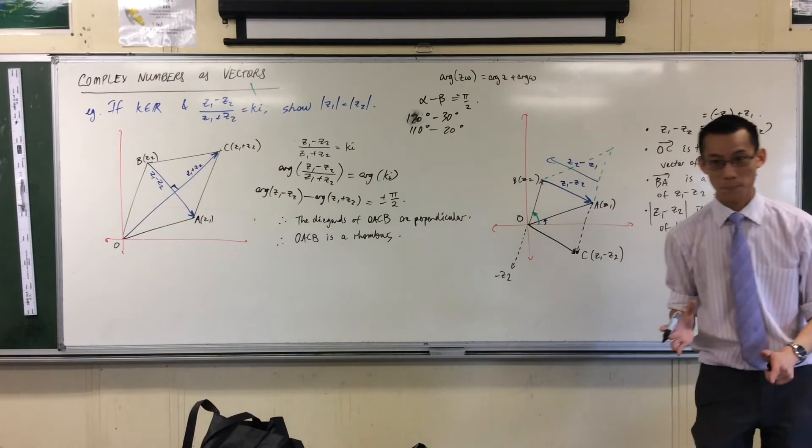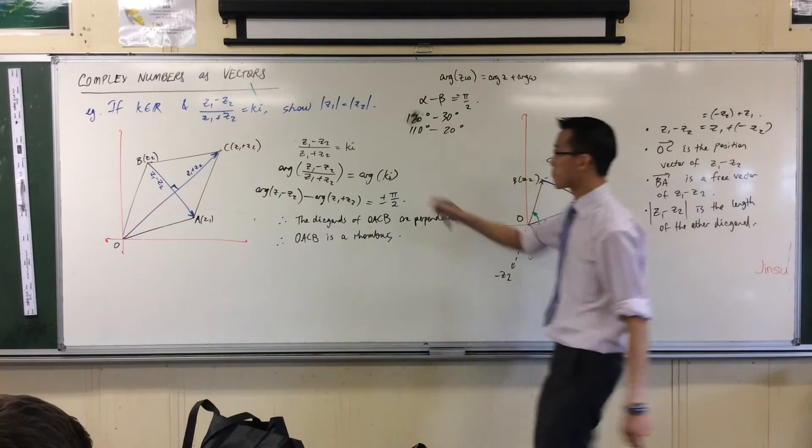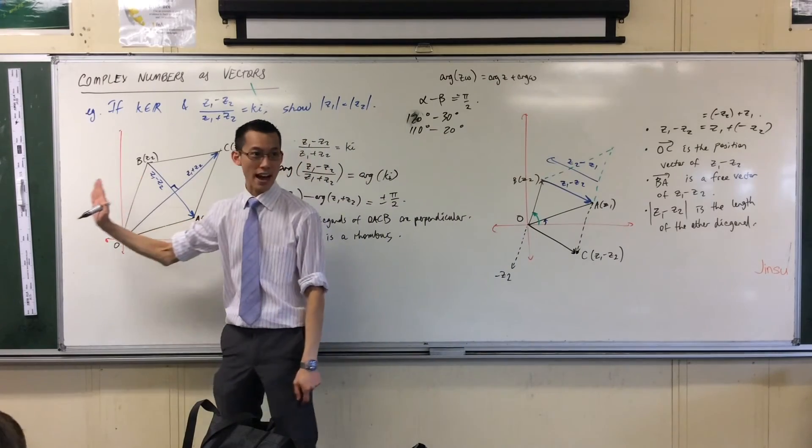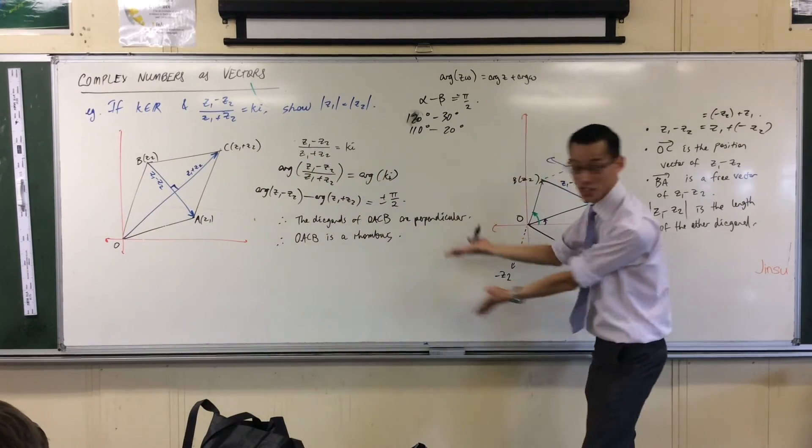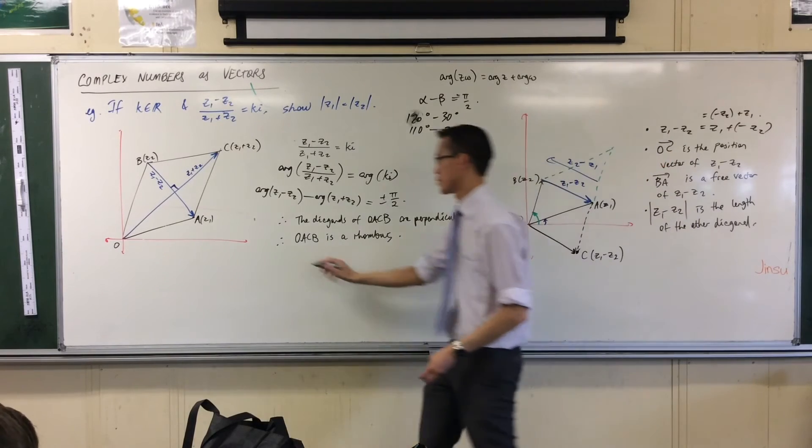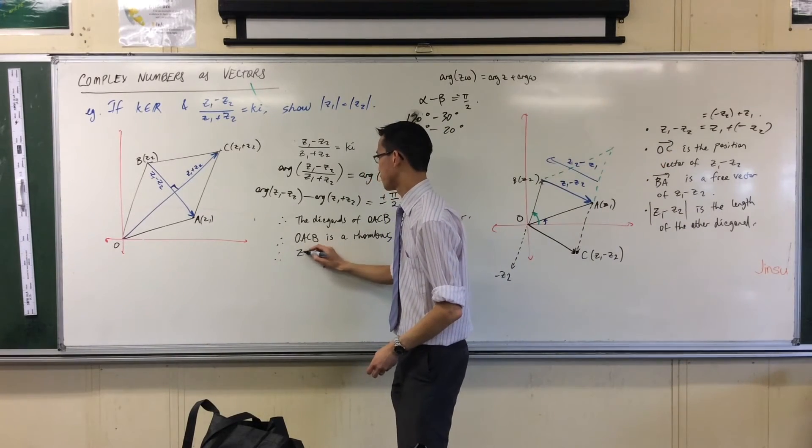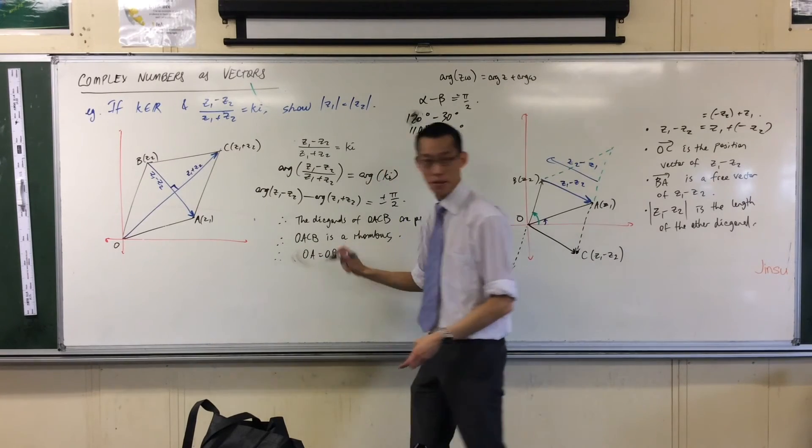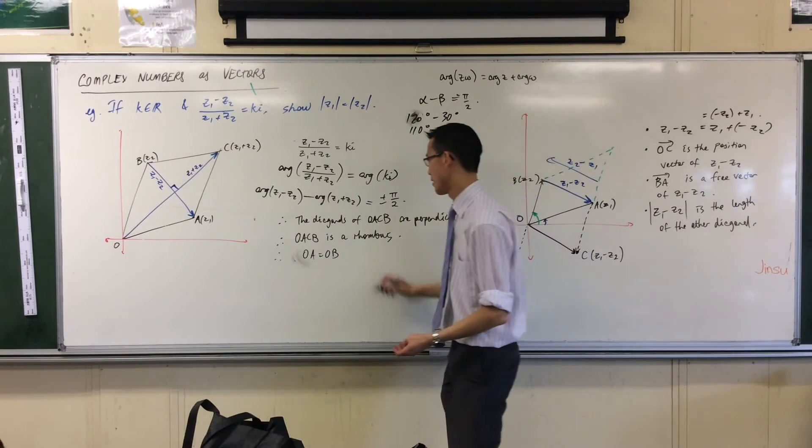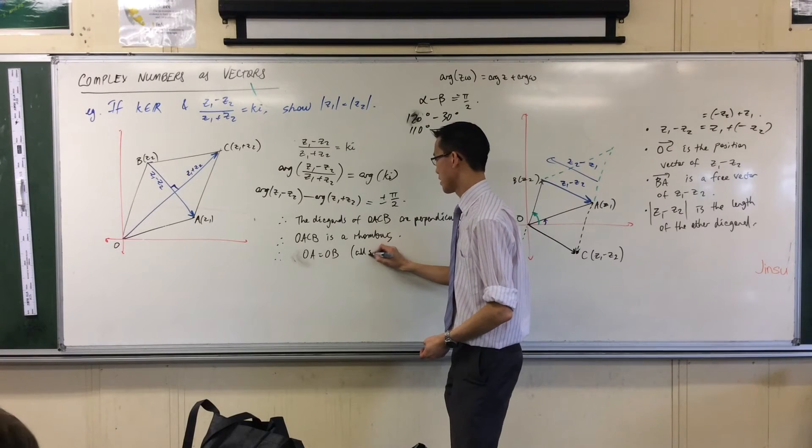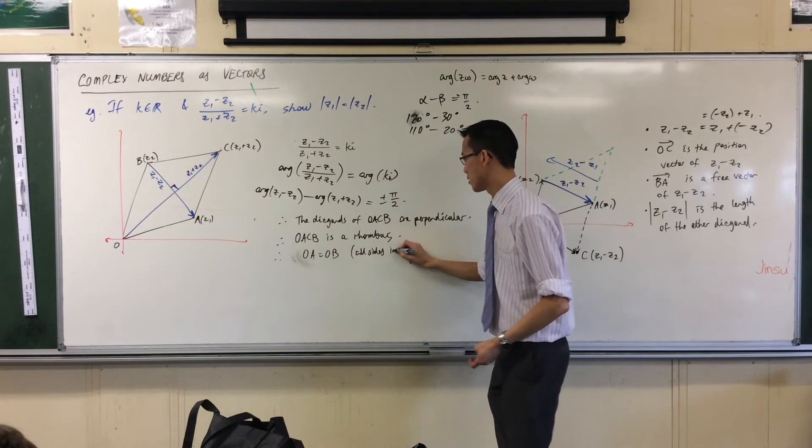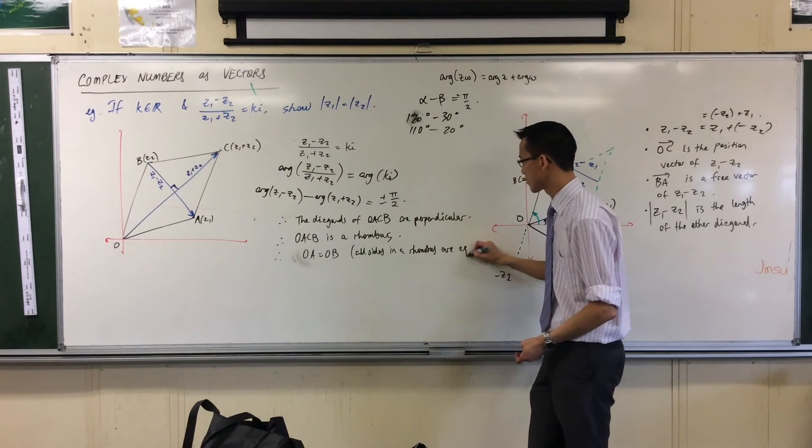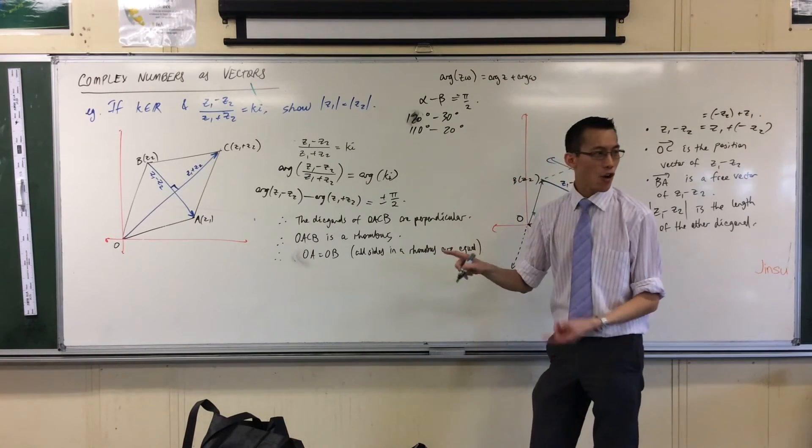And I almost don't need to say anything else, do I? What am I trying to prove again? I'm trying to prove that these two things, Z1 and Z2, this guy and this guy, have the same length, which by definition a rhombus does. I guess I would say OA equals OB because I'm talking about lengths. All sides in a rhombus are equal.